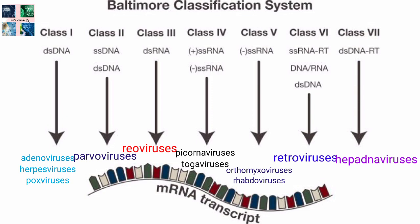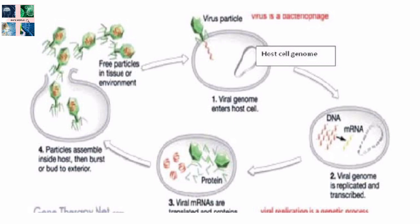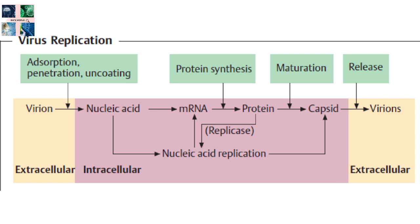Next is the replication cycle. Viral populations do not grow through cell division because they are acellular. Instead, they use the machinery and metabolism of a host cell to produce multiple copies of themselves and assemble within the cell. When infected, the host cell is forced to rapidly produce thousands of copies of the original virus. There are six basic stages in the viral life cycle. The first is attachment — a specific binding between viral capsid proteins and specific receptors on the host cell surface. This specificity determines the host range and type of host cell a virus can infect.